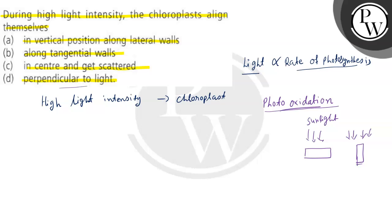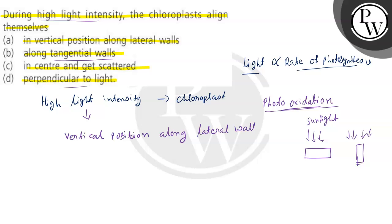If there is normal moderate light intensity, then the chloroplasts will align themselves along the tangential walls. But here we are asked about high light intensity. So at high light intensity, they will align in vertical position — vertical position along the lateral wall. In the mesophyll cells, the chloroplasts will align in a vertical position along the lateral wall.